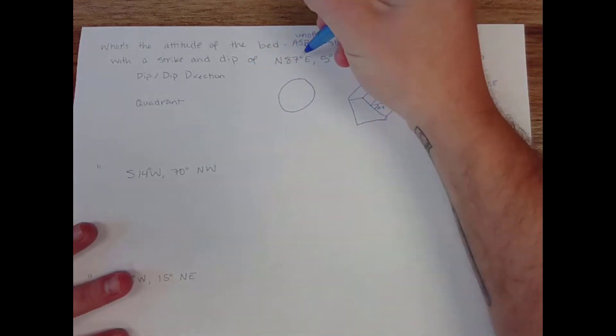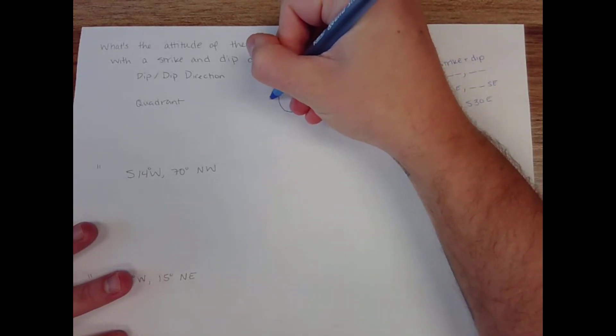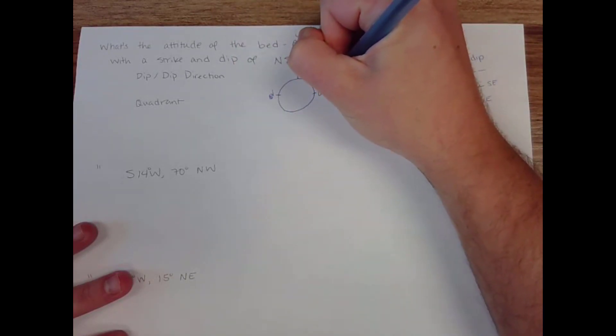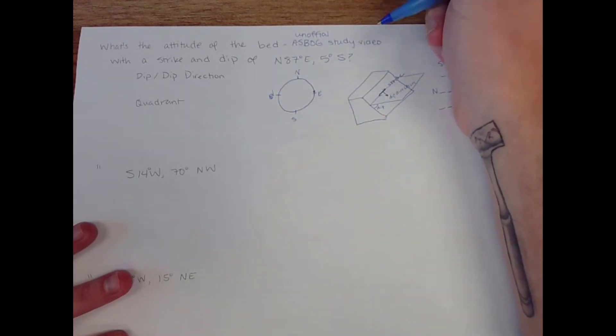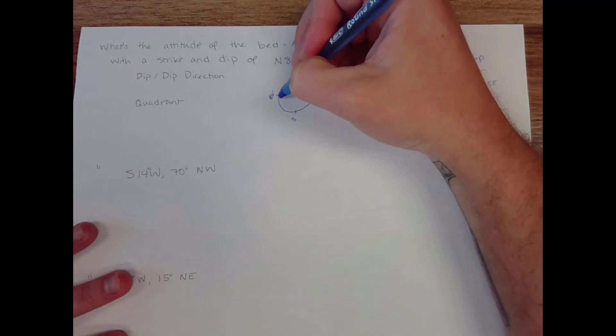and come in here and just try to visualize north 87 east. So if I go to north, then I move over 87 degrees toward the east. That's west, that's east. So north 87 degrees east puts us really close to just straight down to the east. And we're striking that direction.